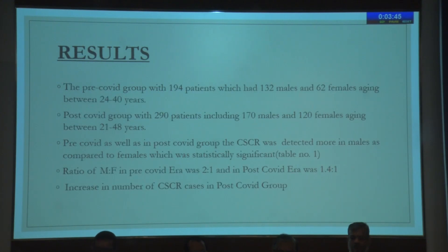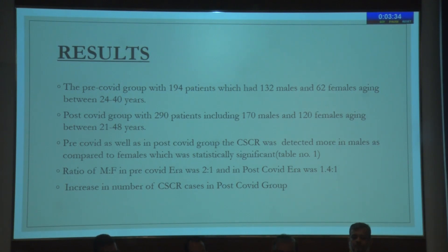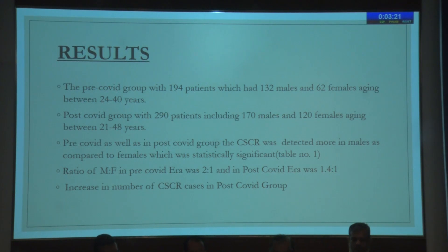In the pre-COVID group, there were 194 patients — 132 male and 62 female — aged 20 to 40 years. In the post-COVID group, there were 290 patients — 170 male and 120 female — aged 21 to 48 years. CSR was detected more in males than females in both groups, which was statistically significant. The male-to-female ratio was 2:1 in the pre-COVID era and 1.4:1 in the post-COVID era, and there was an increased number of CSR cases in the post-COVID group.